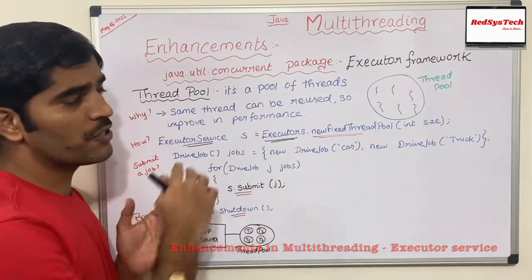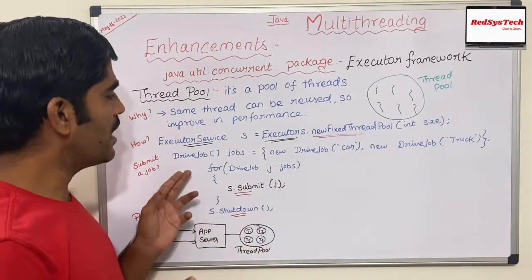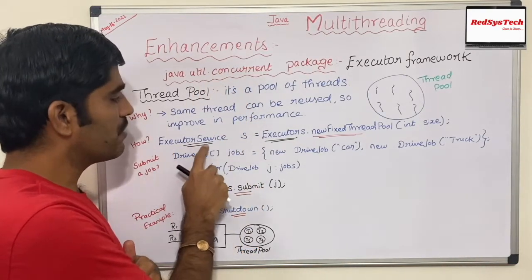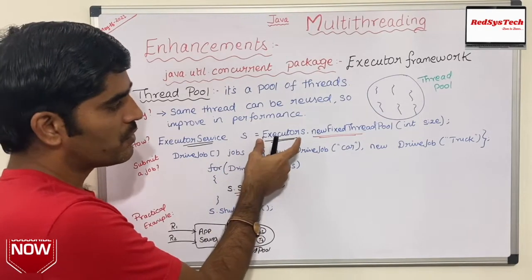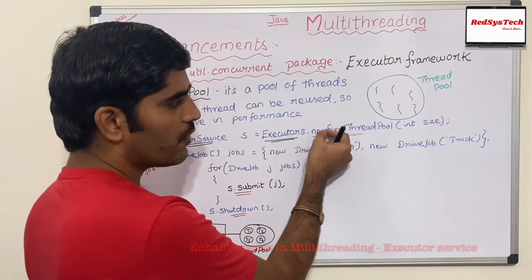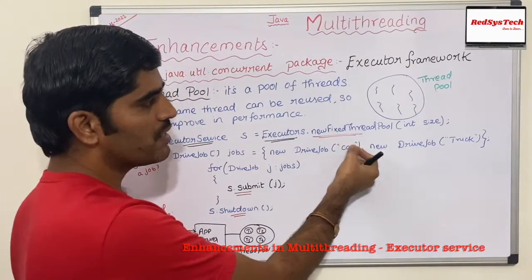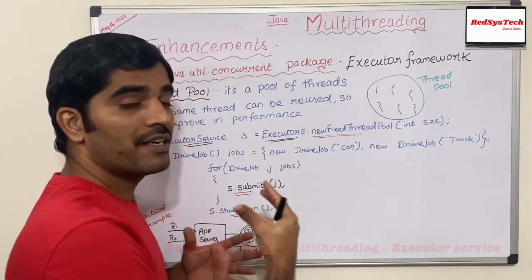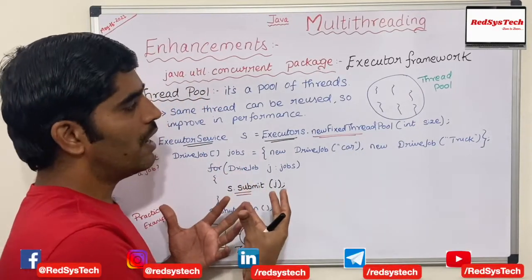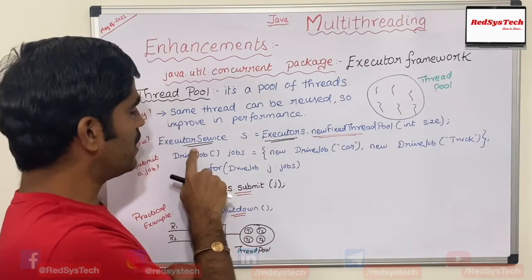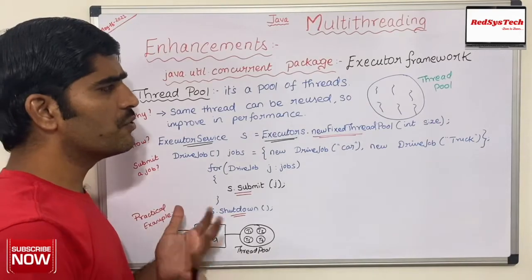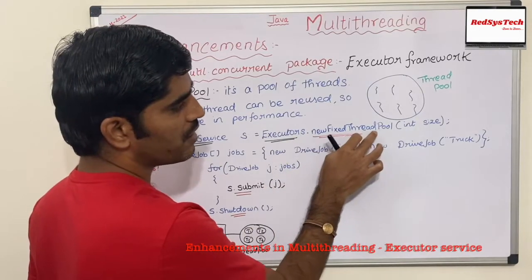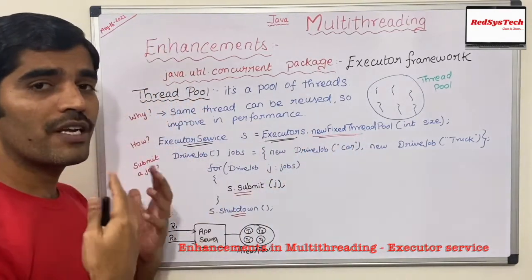Now, how do we use the Executor Framework? There is a class called ExecutorService under the concurrent package. You create an object for ExecutorService: 'ExecutorService es = Executors.newFixedThreadPool(n)'. Here you are creating a new fixed thread pool — fixed means you define a size, how many threads you want. If you say 100, there will be 100 threads created under your thread pool under that ExecutorService.